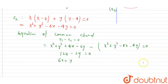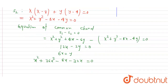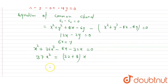So 6x equal to y. Putting y equal to 6x into S2: x squared plus 36x squared minus 8x minus 24x equal to 0, giving 37x squared minus 32x equal to 0. So x equals 0 (first root), or x equals 32 plus 8 divided by 37, which is equal to 40 divided by 37.